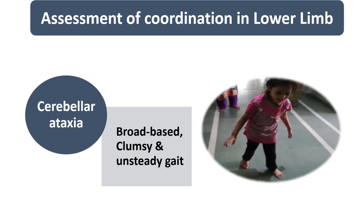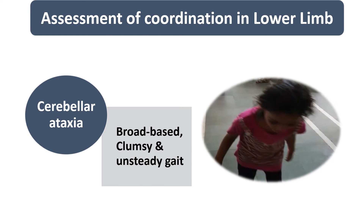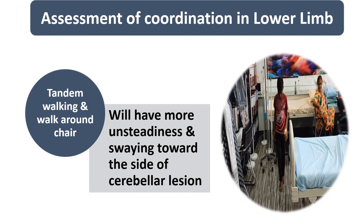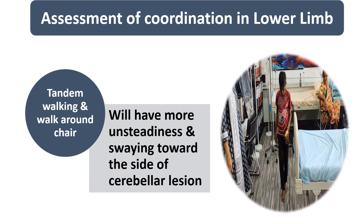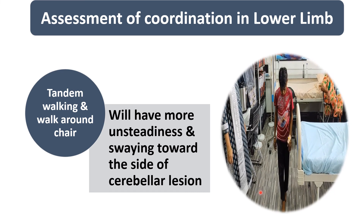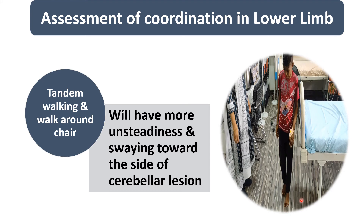We then assess the child's gait. In cerebellar ataxia, the child will have a broad-based, clumsy, unsteady gait. In this video, you can see the child is having a broad-based, clumsy gait — this is a cardinal sign of cerebellar involvement. We also assess tandem walking and walk-around-chair. If the child shows any unsteadiness or swaying during tandem walking, this indicates a cerebellar lesion. Generally, the child will sway toward the side of the cerebellar lesion.